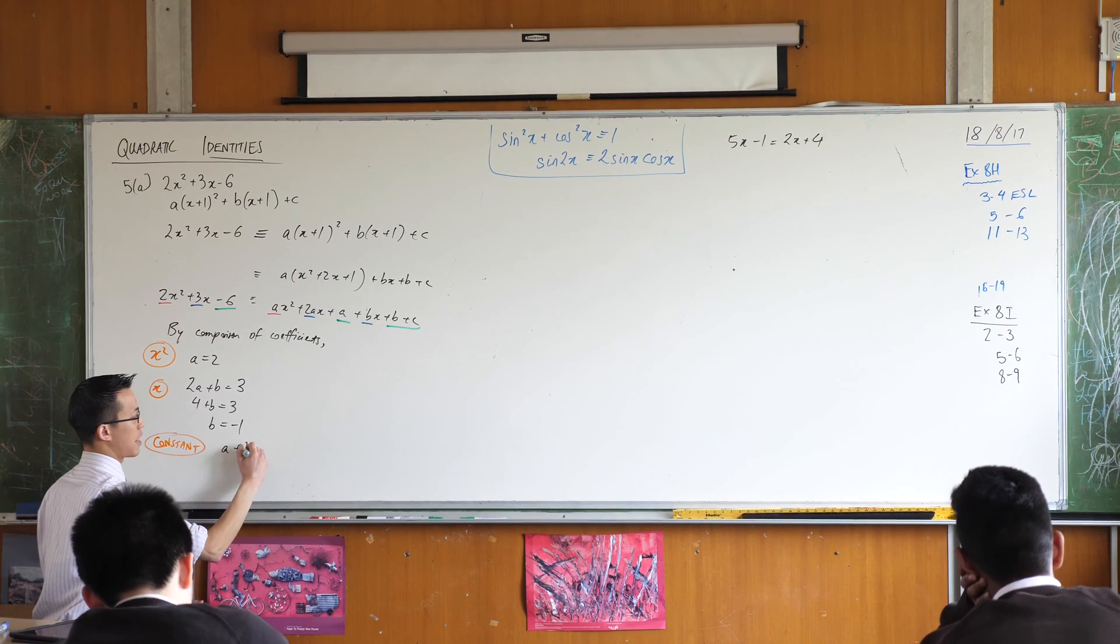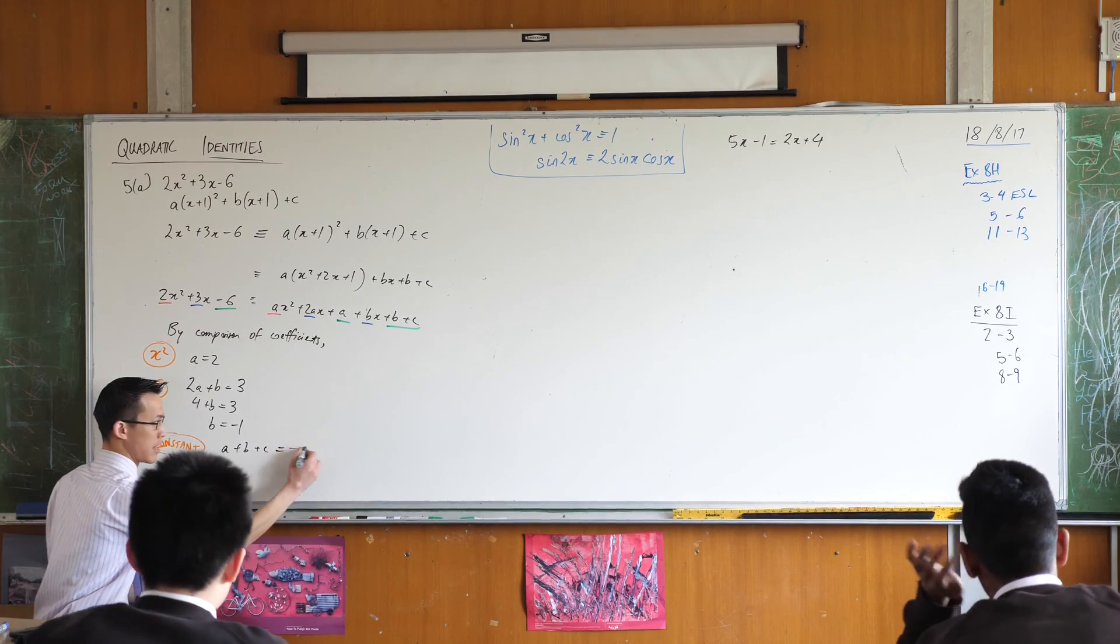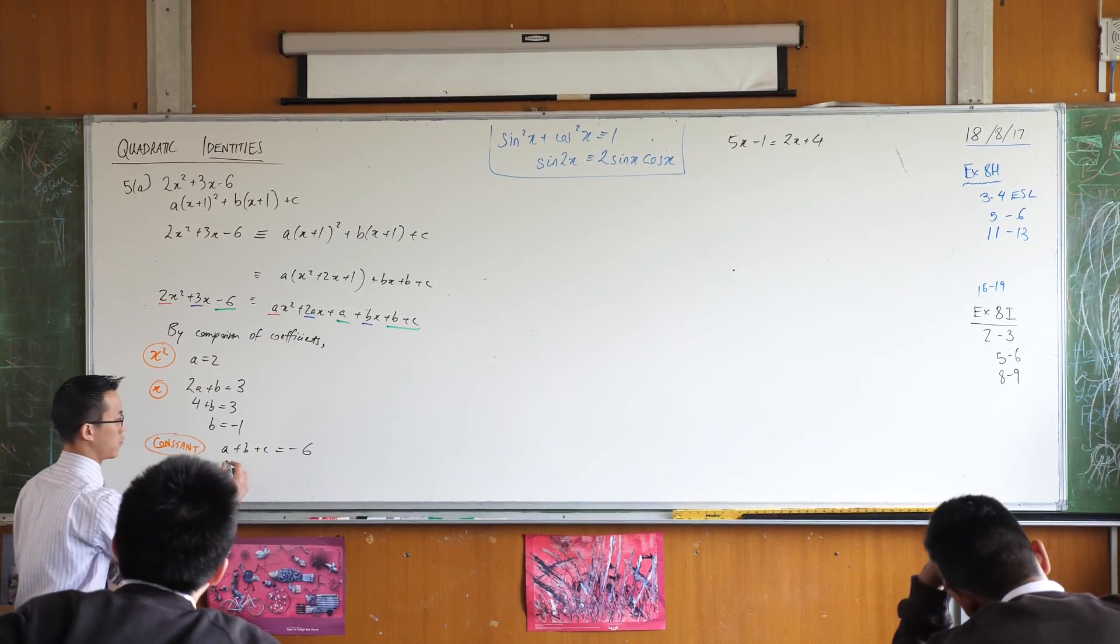I've got a plus b plus c. What's it equal to on the left? Negative 6. But I know what a and b are equal to already. 2 and negative 1.